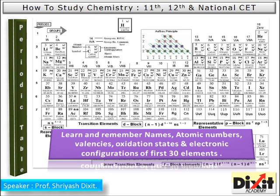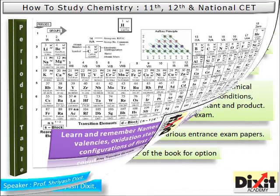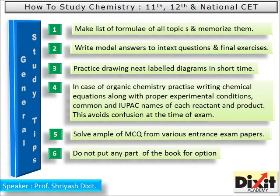Regarding the periodic table, I suggest all chemistry students have a periodic table in their study room. Learn and remember names, atomic numbers, valences, oxidation states, and electronic configurations of at least the first 30 elements. This data is required while solving numericals or answering objective questions. As of today, about 120 elements are known; if you learn and memorize each element daily, within three months you can cover the whole periodic table.